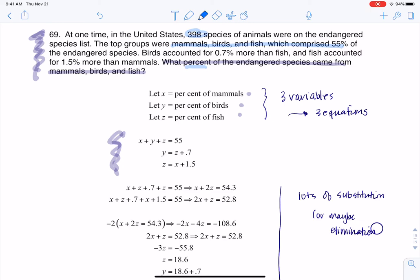So that sentence that mammals, birds, and fish comprise 55 percent of the total number of endangered species, I'm going to translate into this equation that x plus y plus z is equal to 55.